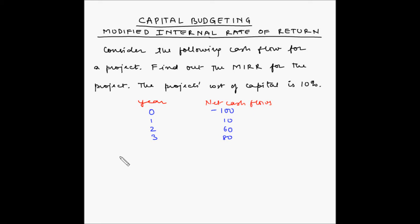In this video, we will look at another example of modified internal rate of return, or MIRR. Consider the following cash flow for a project and find out the MIRR. The project's cost of capital is 10%. These cash flows are in rupees.